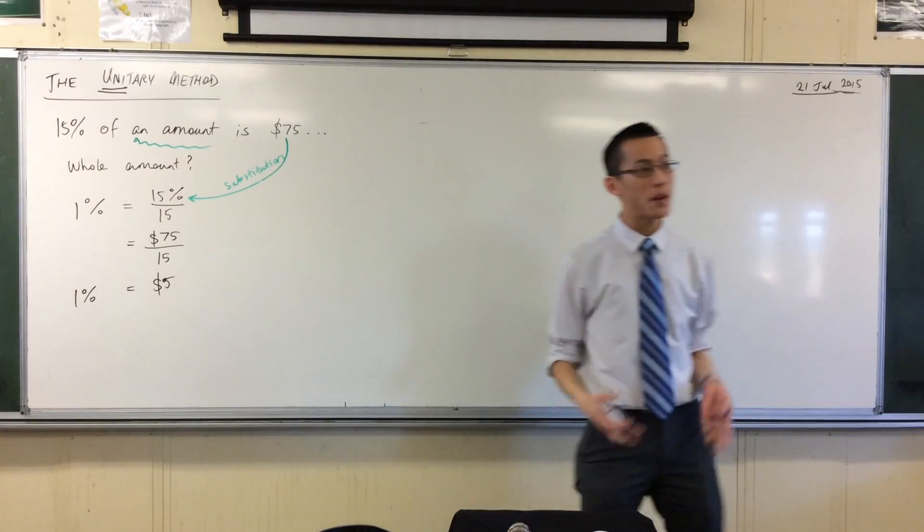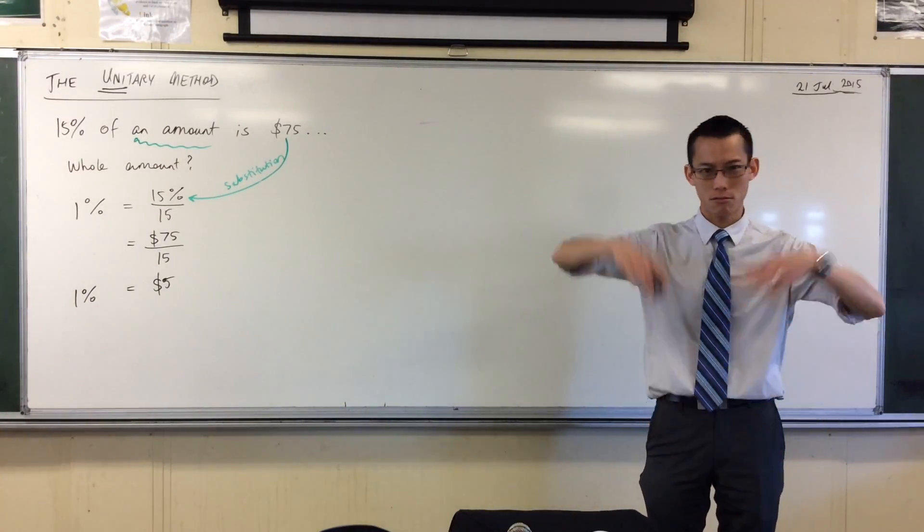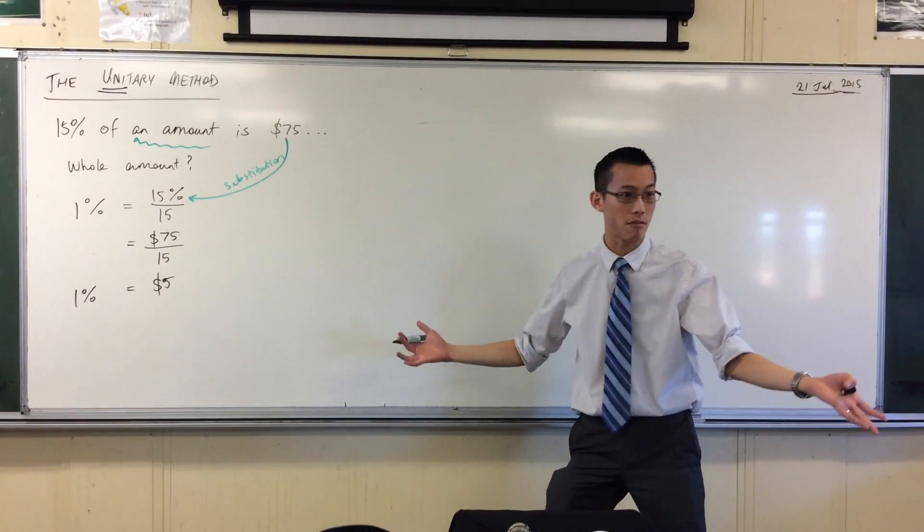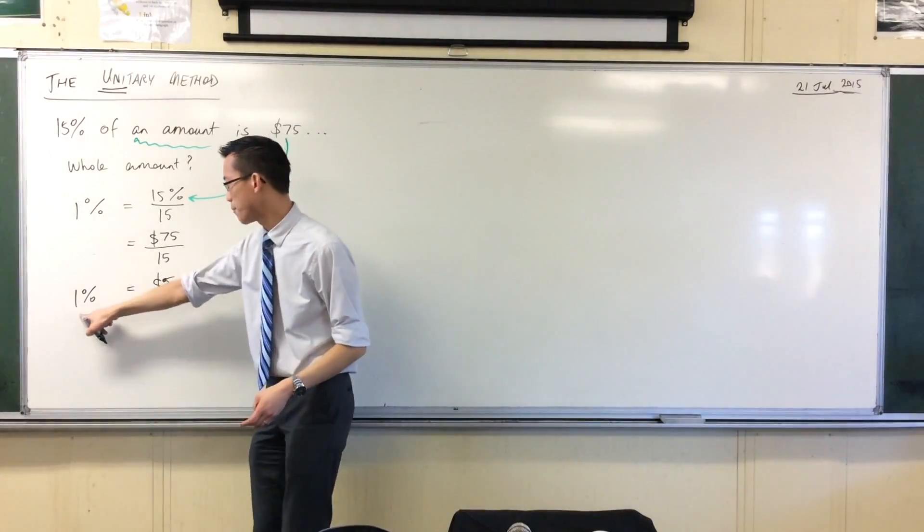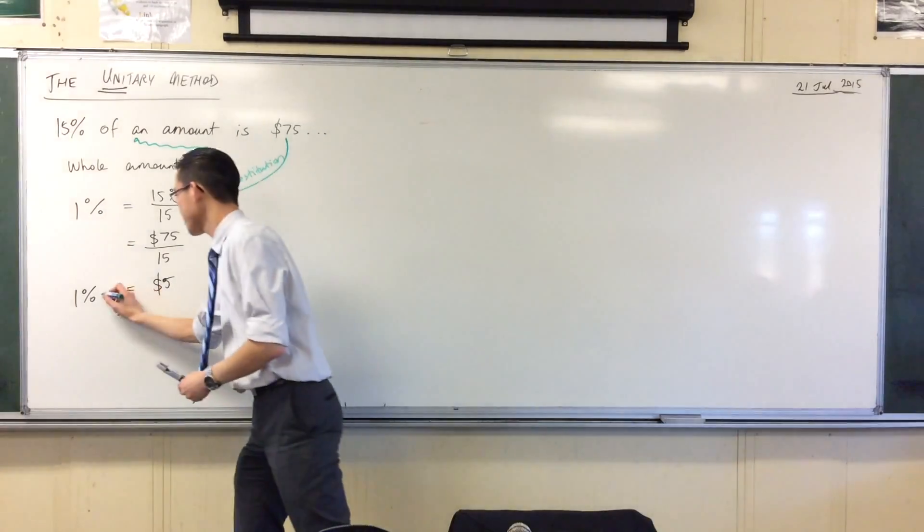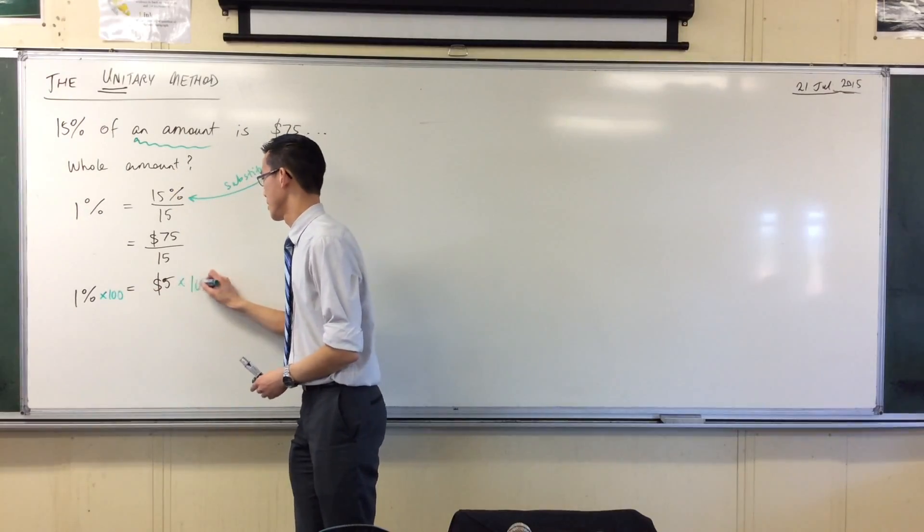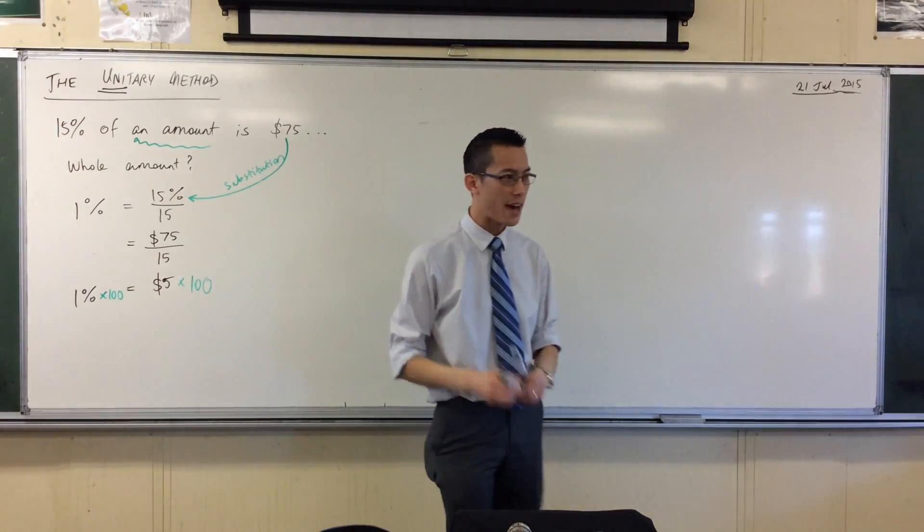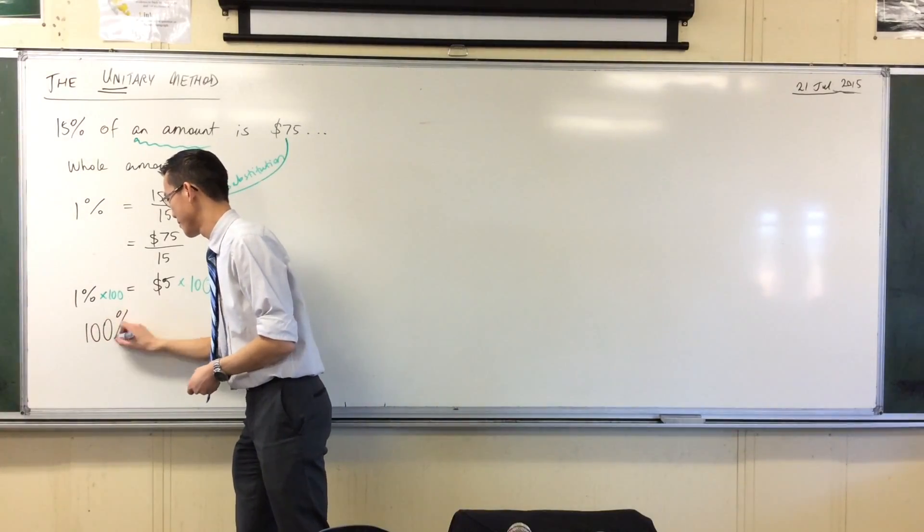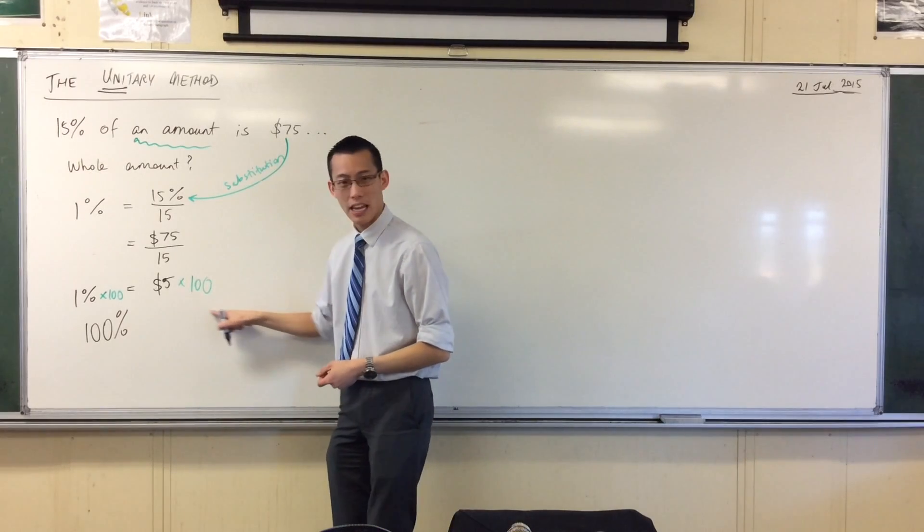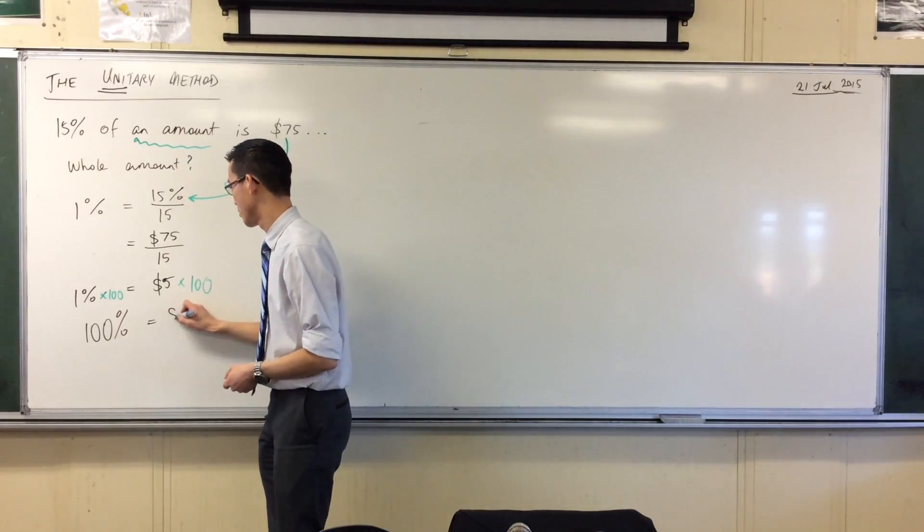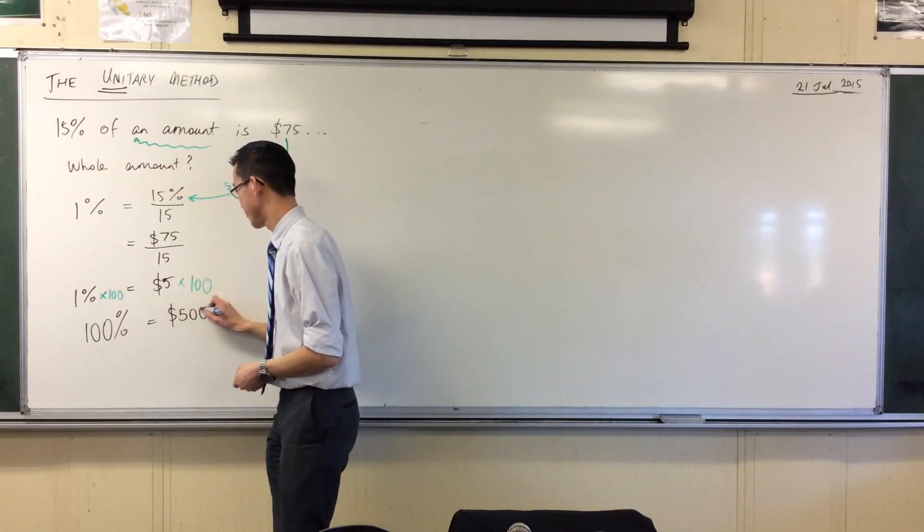Well, once you've got one, it's super easy to get to the whole amount, because what is the whole amount? What percentage? It's 100%. 100 out of 100. So if 1% is this, then all I have to do is multiply both sides by 100. And that'll land me with, on the left-hand side, 100%, 1 times 100. And over here, $5, 100 of them, $500. Done.